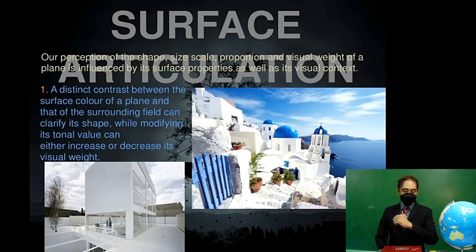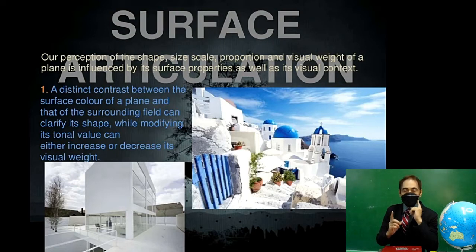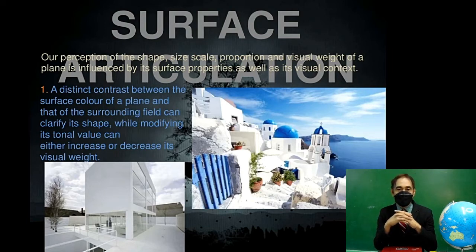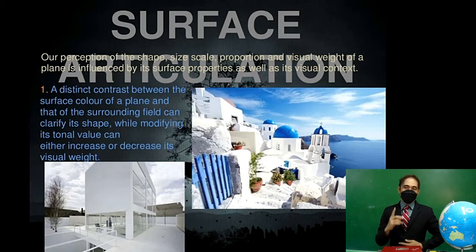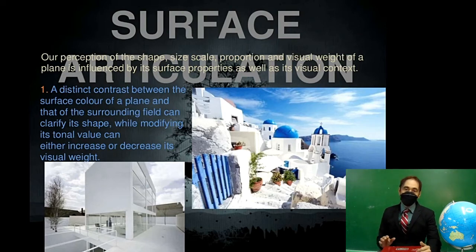Surface articulation — the perception of the shape, size, scale, proportion, and visual weight of a plane — is influenced by surface properties as well as its visual context. A distinct contrast between the surface color of a plane and that of the surrounding field can clarify its shape, or by modifying its tonal value, can either increase or decrease its visual weight.